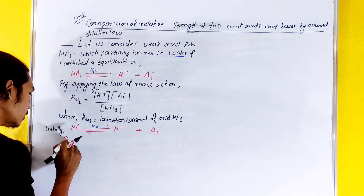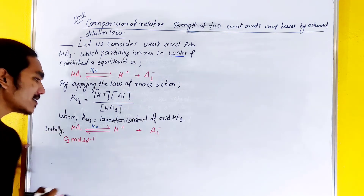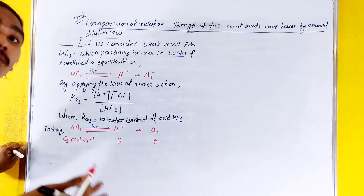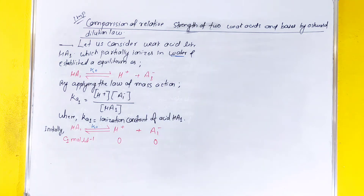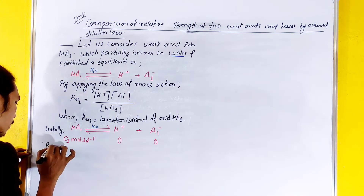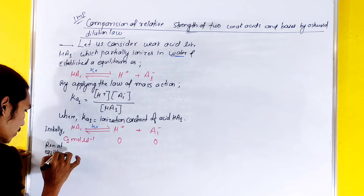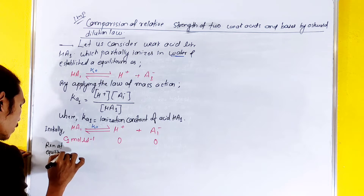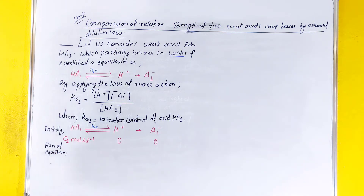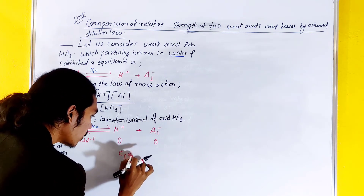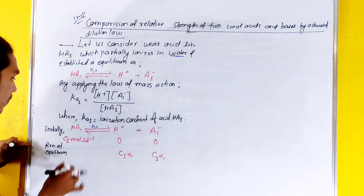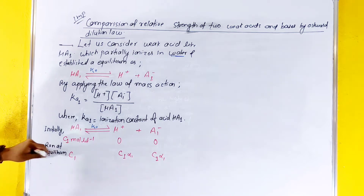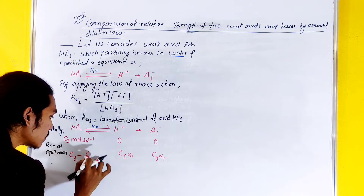At initial condition, C1 mole per liter with 0 and 0 for products. At equilibrium, HA1 is C1 minus C1·α1, and H⁺ and A1⁻ are each C1·α1 mole per liter.